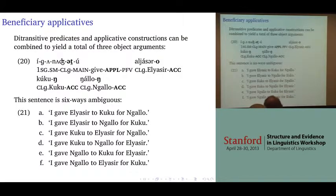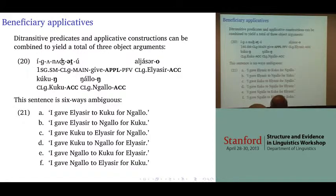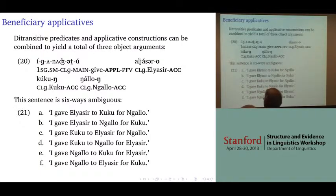If you take a ditransitive predicate and add an applicative, you end up with a construction that has three objects, illustrated in example 20. You have three objects one right after the other after the verb, with the accusative marker. Amazingly, this is six ways ambiguous, which is exactly what we've come to expect.